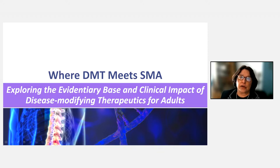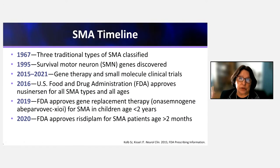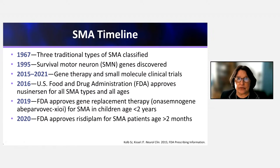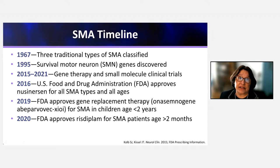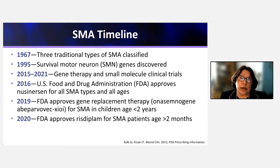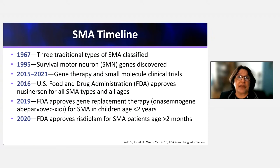Now let's talk about disease-modifying therapies in adult SMA specifically. To give perspective, here is the SMA timeline. In 1967, the three traditional SMA classification types were developed. In 1995, 5Q was identified as the chromosome location, and the SMN1 gene was identified as SMA-related. In 2011, Columbia University dosed the first patient in a first-in-human study with an antisense oligonucleotide. By 2016, the FDA approved nusinersen for SMA of all types and all ages.